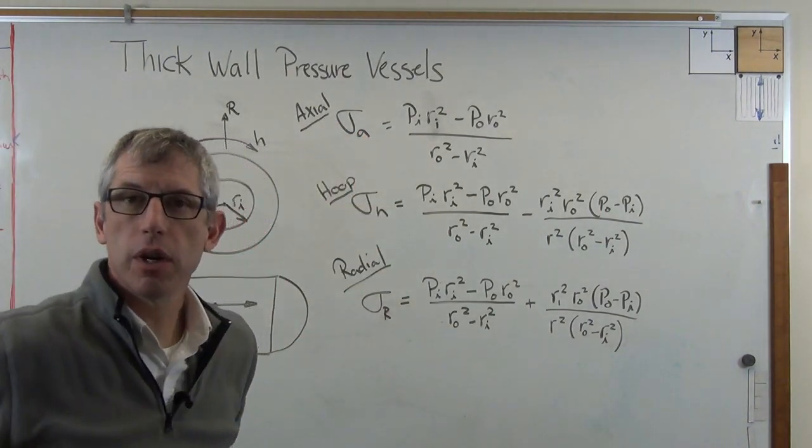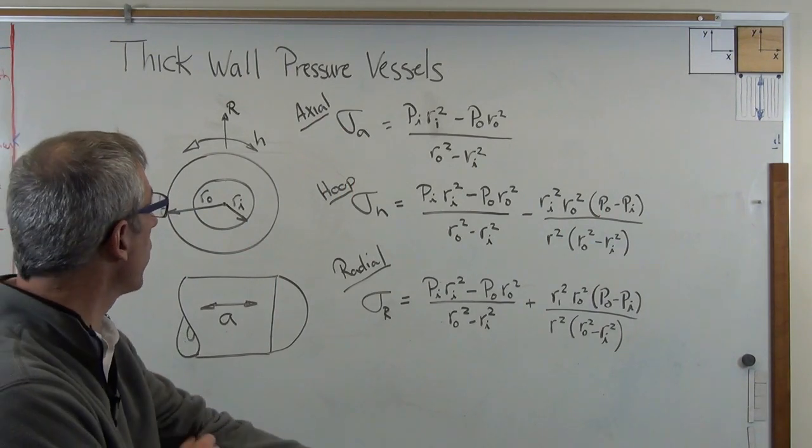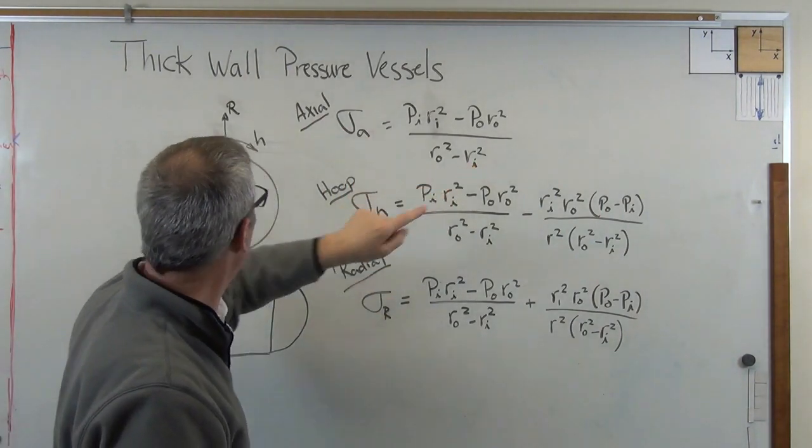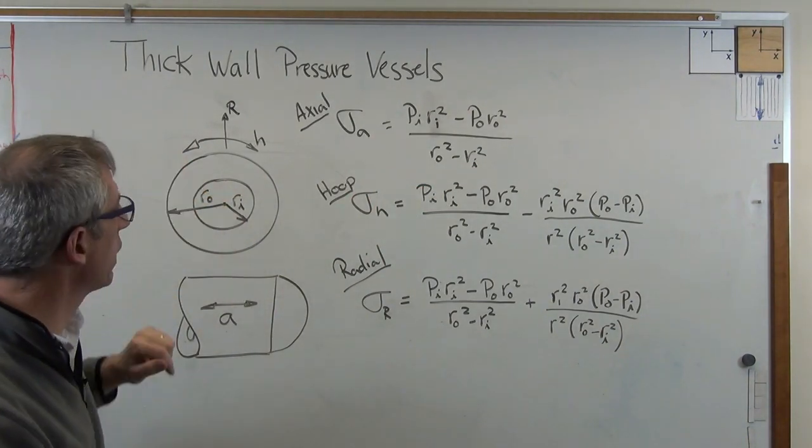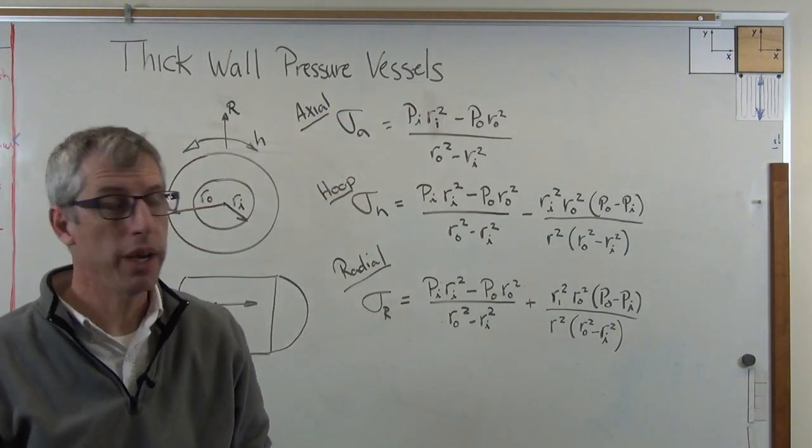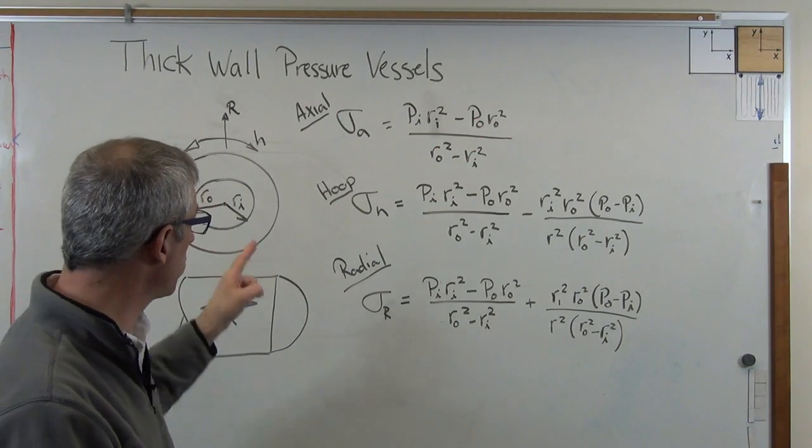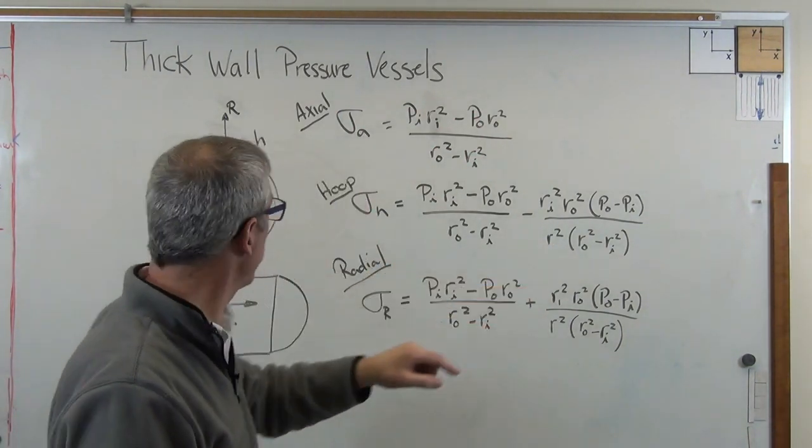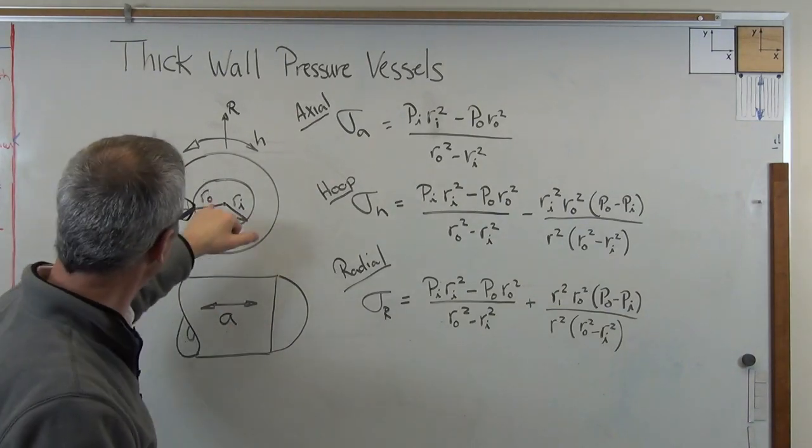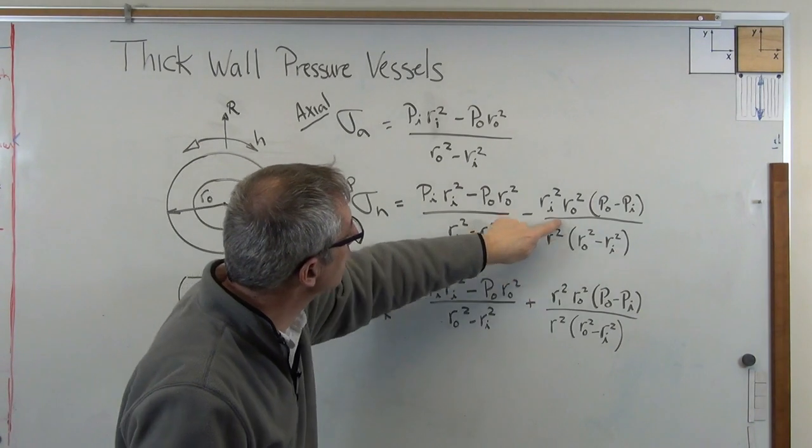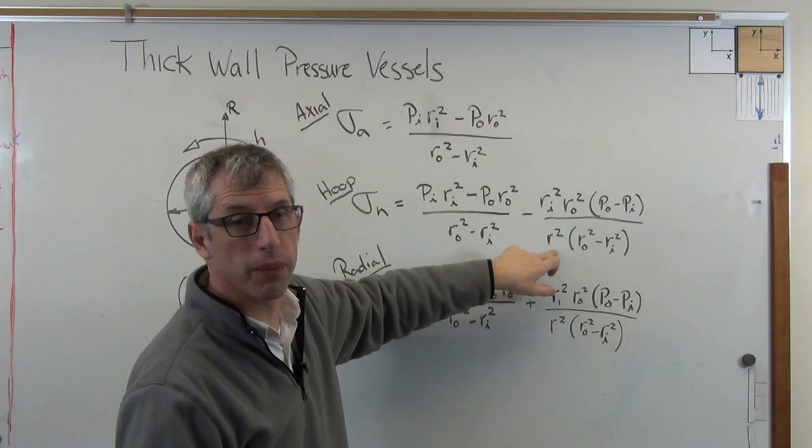Here's the expressions for a thick walled pressure vessel. Now, these are pretty complicated, so let's just walk through them real quick. RO and RI, RI is the inner radius, RO is the outer radius. PI is the pressure on the inside. PO is pressure on the outside, and I think that pretty much accounts for it except for one thing, just R. R says where you are in the wall measured from the center. That's the radius measured from the center. This is assumed to be in the wall somewhere, so this has to be between RI and RO.